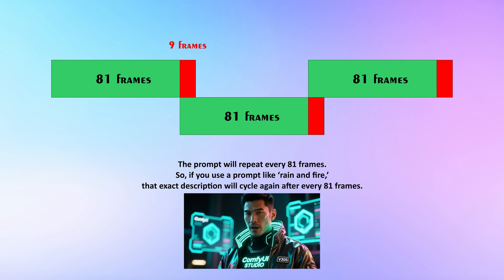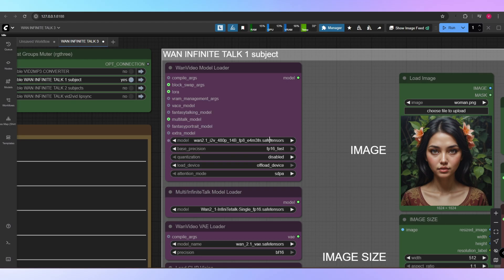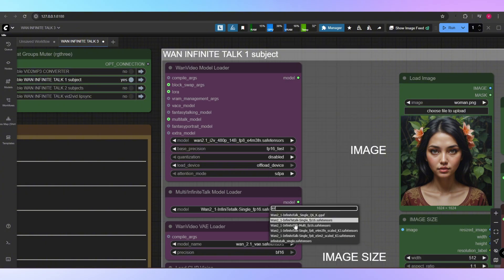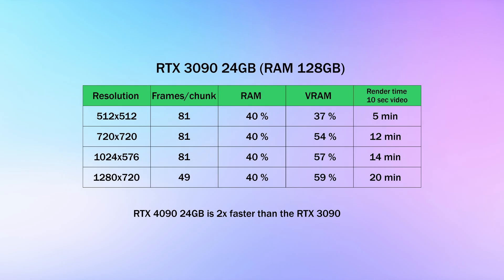So if you use a prompt like 'Rain and Fire', that exact description will cycle again after every 81 frames. Now let's talk about VRAM and models. I tested both the GGUF models and the Basic models, and honestly I didn't notice any difference in VRAM usage or rendering speed. I also tested all the Infinite Talk models — the performance was almost identical. I ran speed tests on an RTX 3090 with 128 gigabytes of RAM. Keep in mind, the RTX 4090 is roughly twice as fast as the 3090. A 10-second video at 512 resolution would take around 5 minutes on a 3090, but only about 2 minutes 30 seconds on the newest RTX cards.